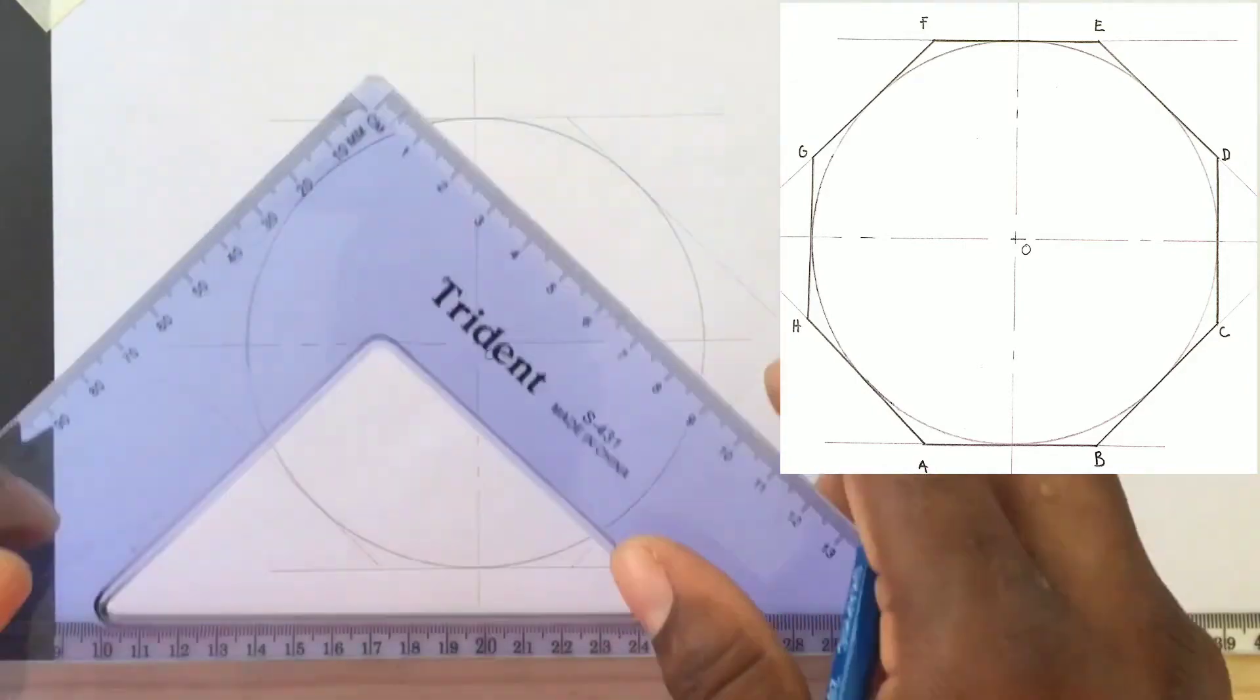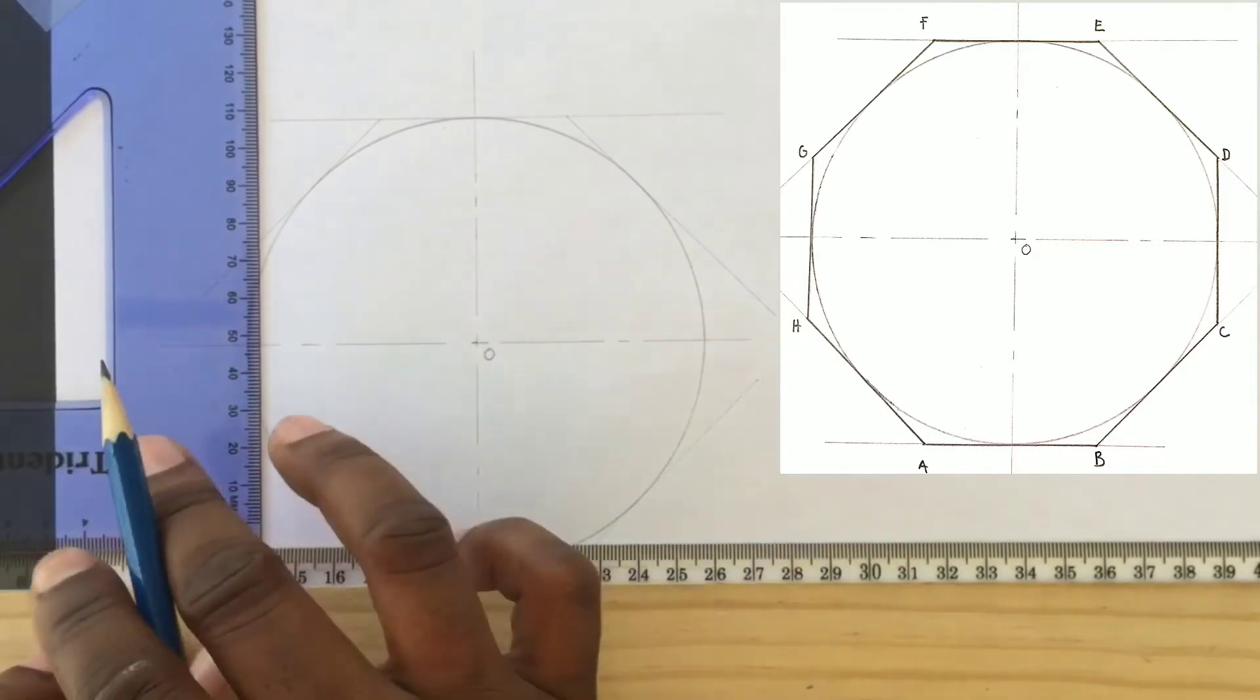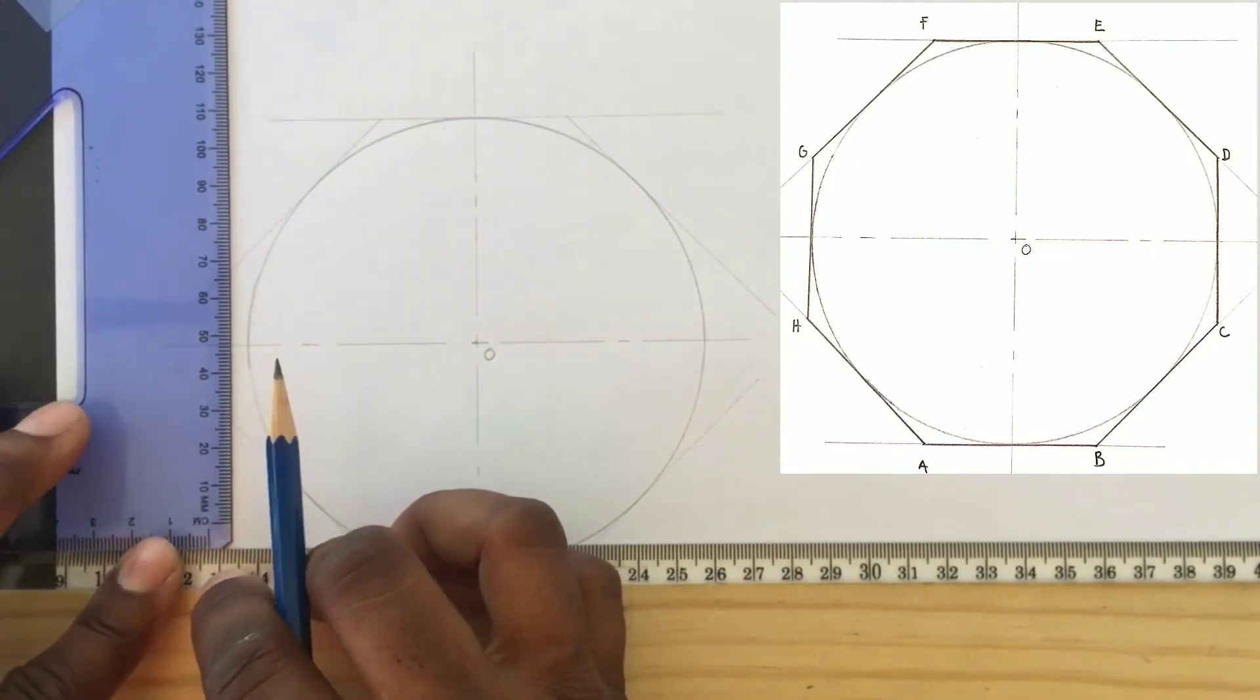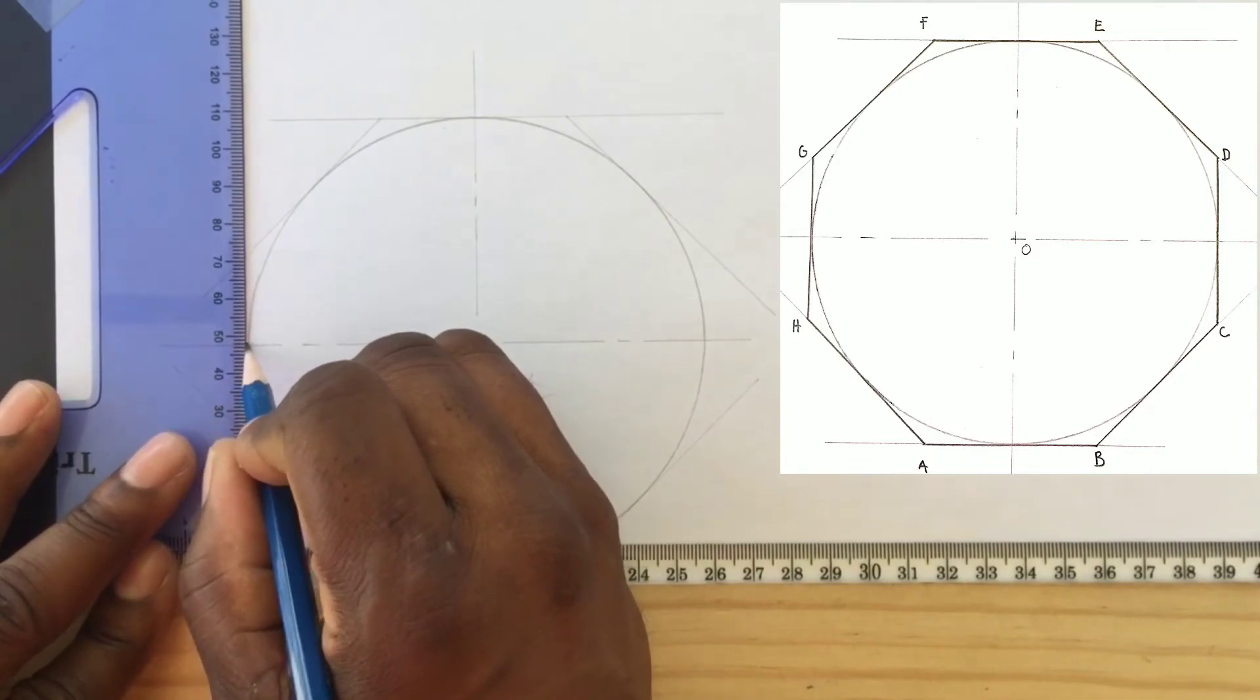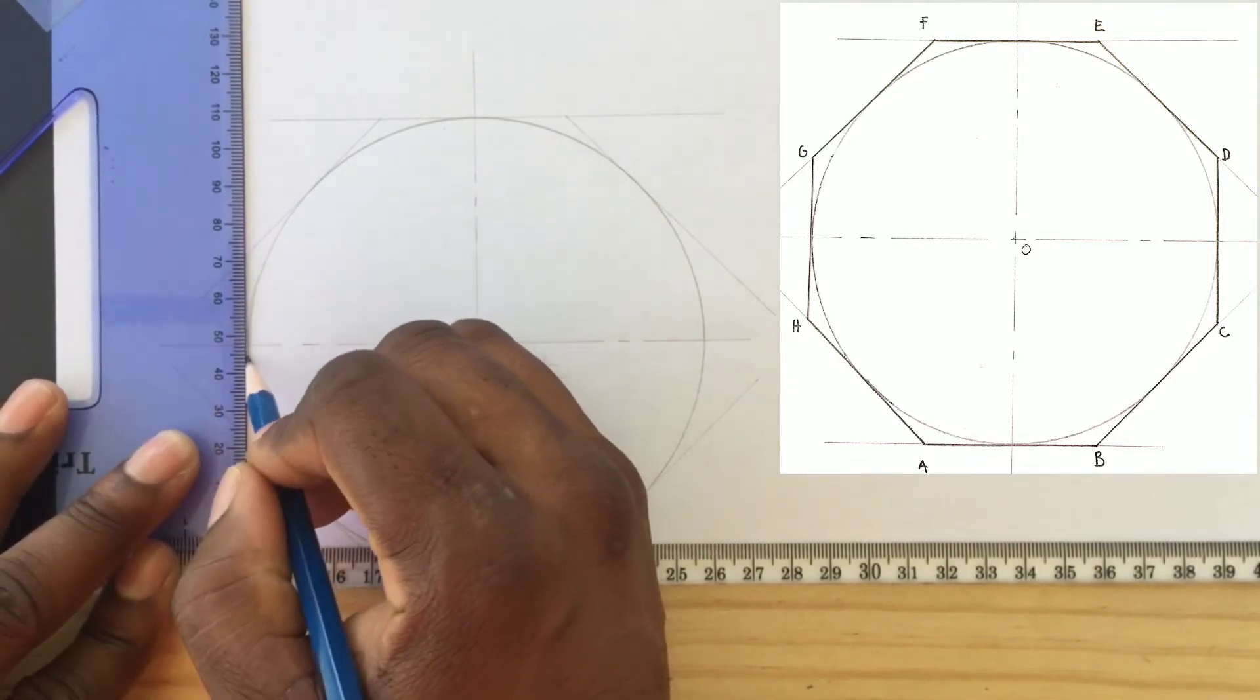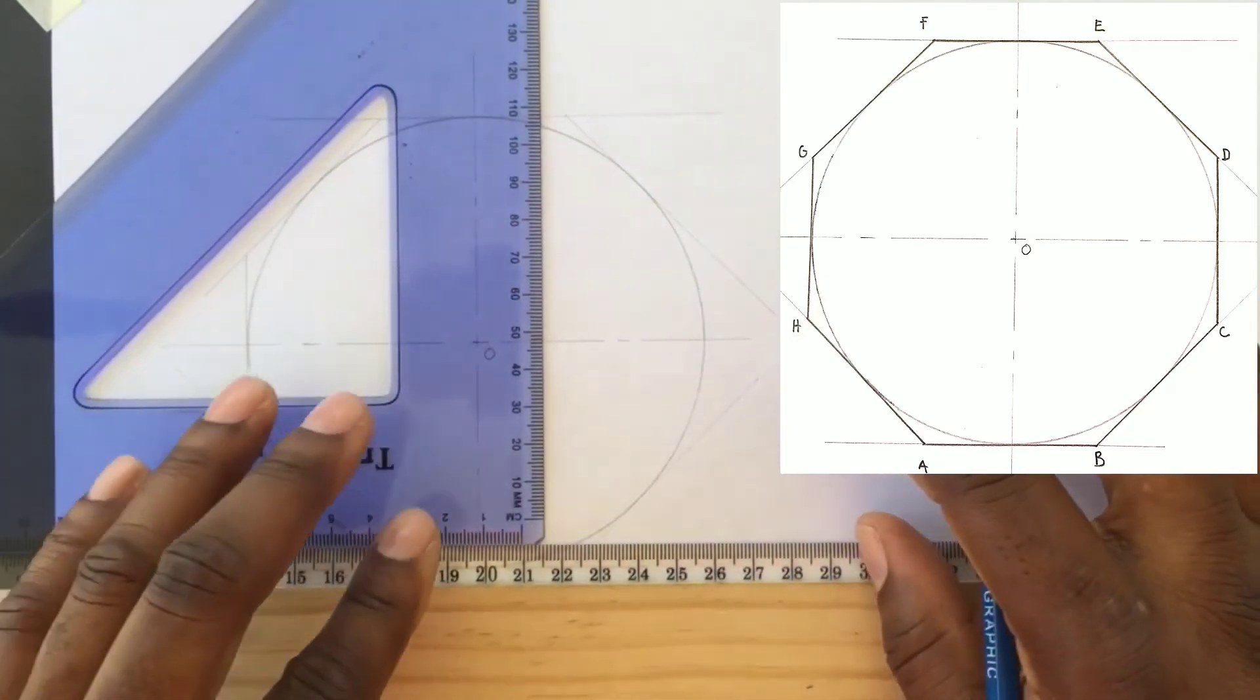We will now use our set square and t-square to draw two perpendicular tangents to the circle, one to the left of the circle and the other tangent to the right of our circle.